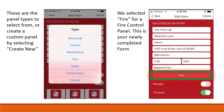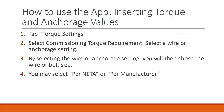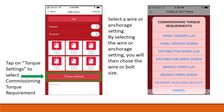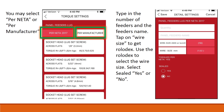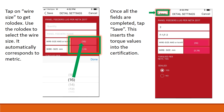Inserting torque and anchorage values. Tap Torque Settings. Select the commissioning torque requirement. Select a wire or anchorage setting. By selecting the wire or anchorage setting, you will then choose the wire or bolt size. You may select Per NEC or Per Manufacturer. Type in the number of feeders and the feeder's name. Tap on Wire Size to get the Rolodex. Use the Rolodex to select the wire size. Select seal Yes or No. It automatically corresponds to metric. Once all the fields are completed, tap Save. This inserts the torque values into the certification.